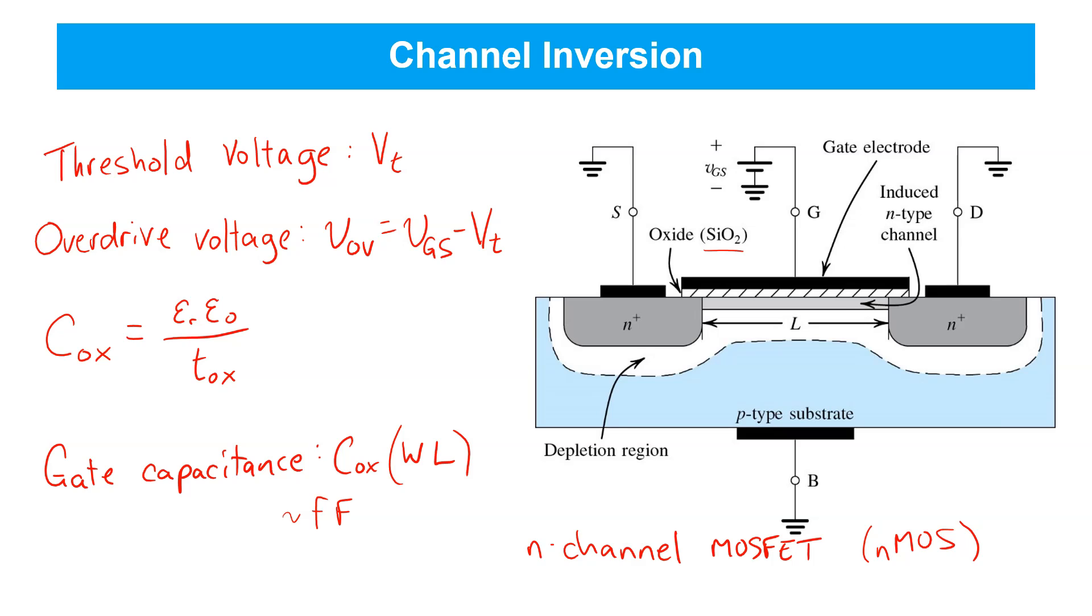Finally, we can write in a simple expression for the charge in the channel region. In this case, it's negative charge carriers, electrons. Now, let's just write the expression for the absolute value of the charge in the channel region.